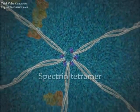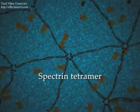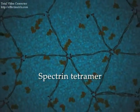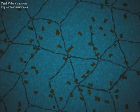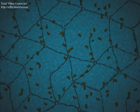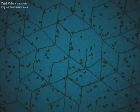Beneath the lipid bilayer, spectrin tetramers arranged into a hexagonal network are anchored by membrane proteins. This network forms the membrane skeleton that contributes to membrane stability and membrane protein distribution.